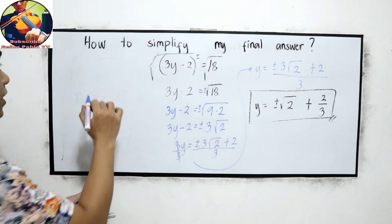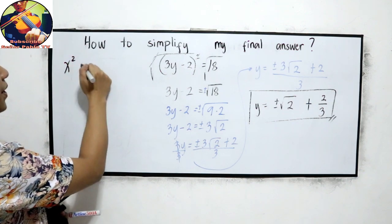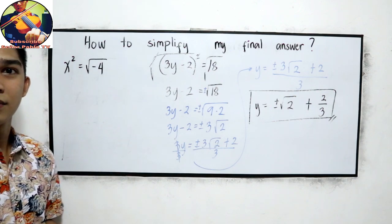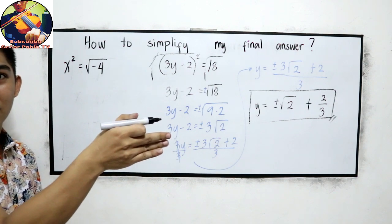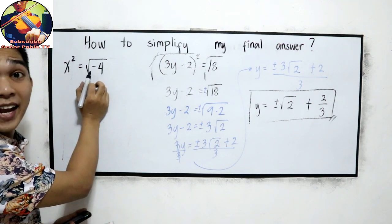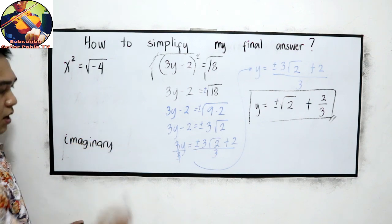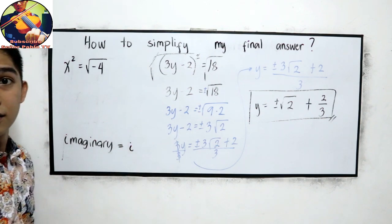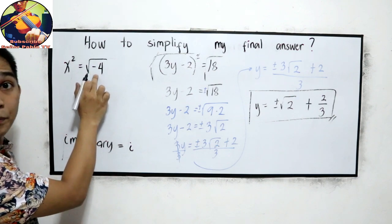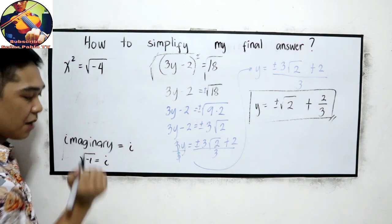I will start with the basic one. Let's say you have x squared is equal to negative 4. In our discussion we had examples with positive perfect numbers inside the square root. But what if we have a negative here? This is when we use what we call imaginary numbers, using the symbol i, because the square root of negative 1 is equal to i.